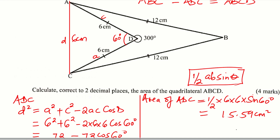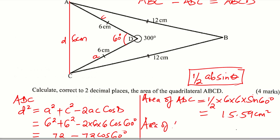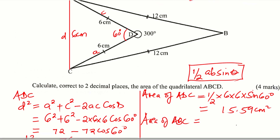After getting that, now we need to get the area of the bigger triangle ABC. For triangle ABC, we can use Heron's formula — we have all the sides: 12, 12, and 6. So let's get the area of triangle ABC using Heron's formula.